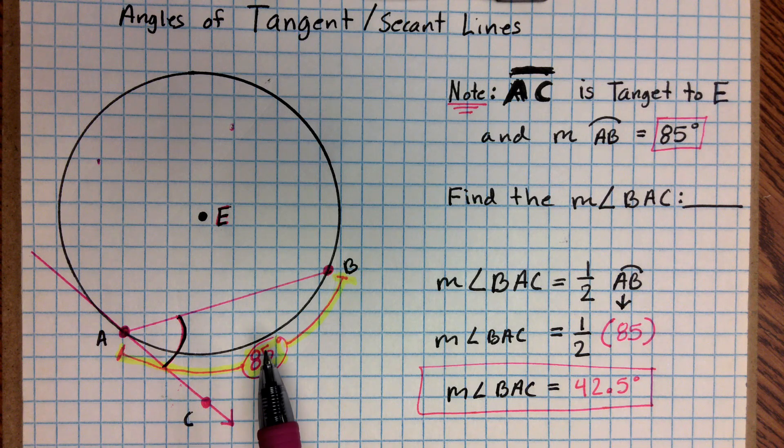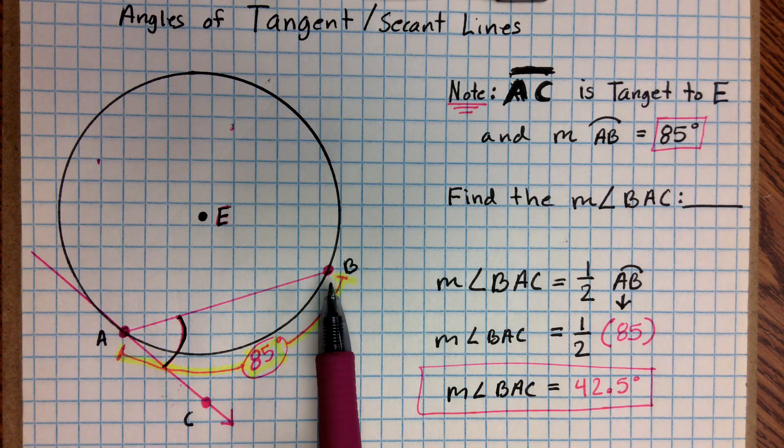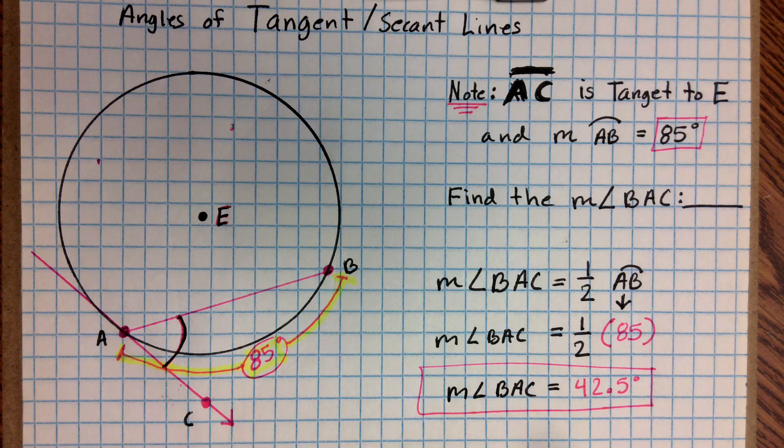So basically when you have a problem like this, you're just going to divide this angle right here of the inscribed arc, its measure, by 2. And that's going to give you the answer. Because dividing by 2 is the same thing as multiplying by 1 half. And that's all there is to it.